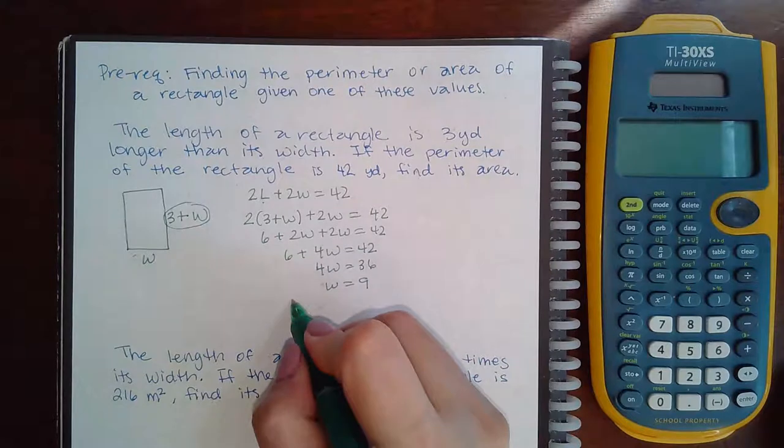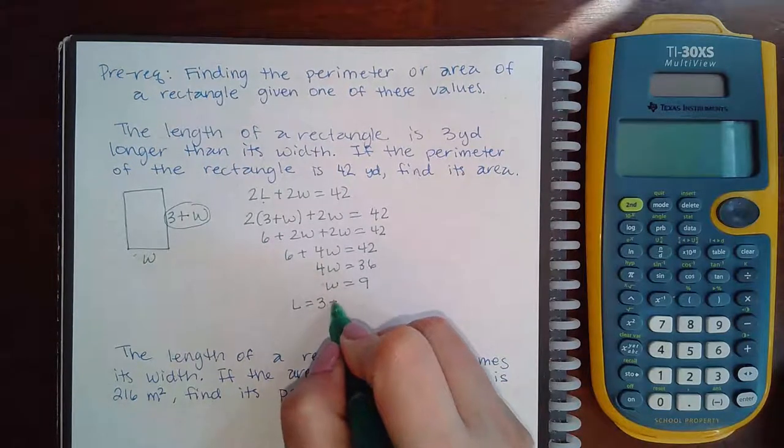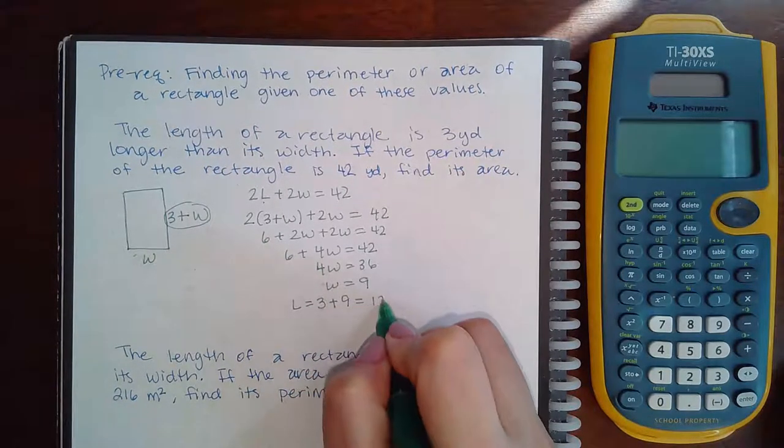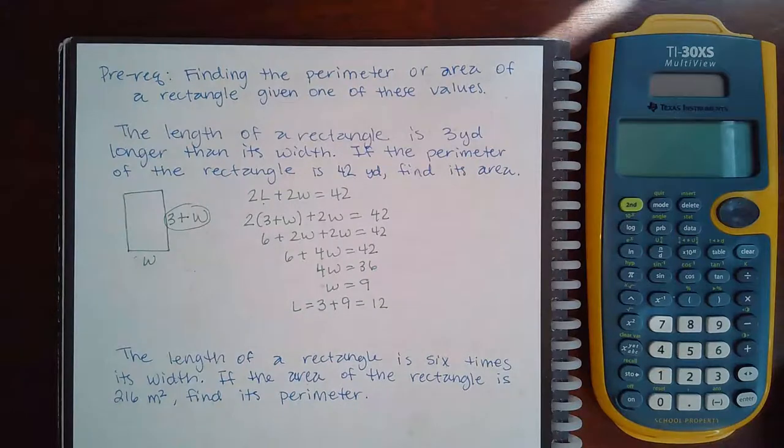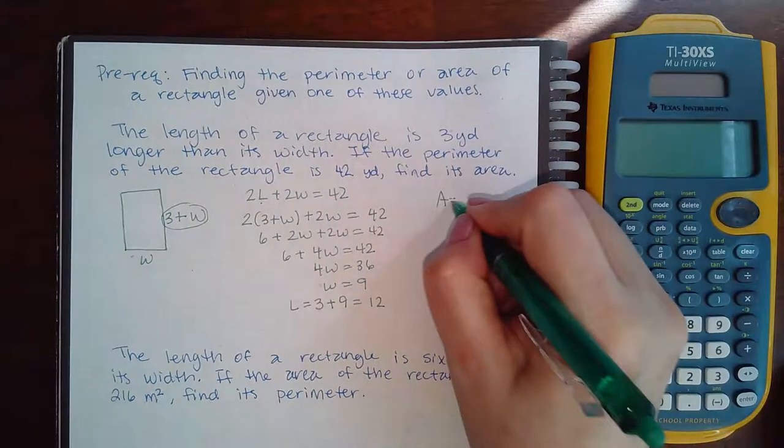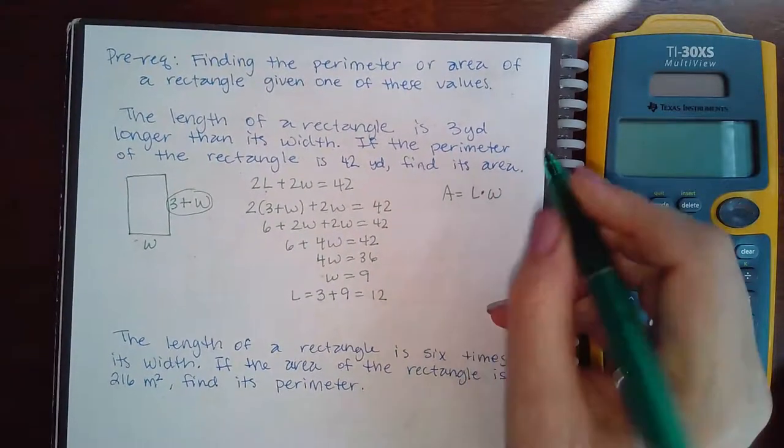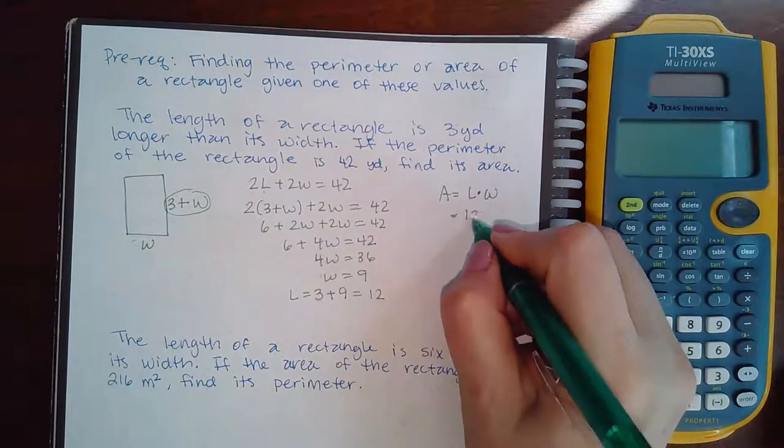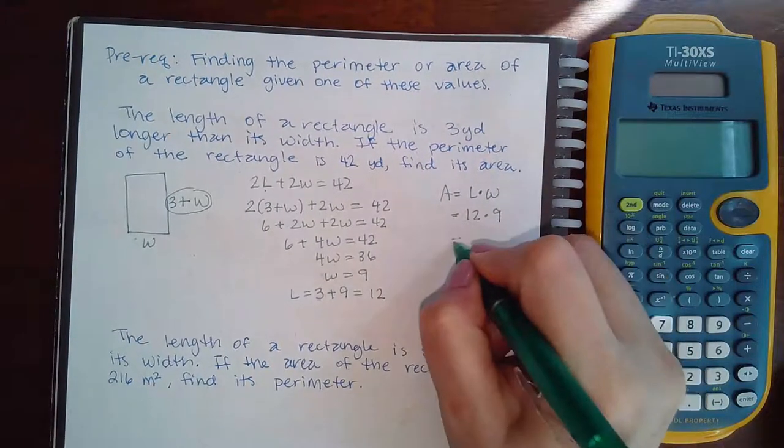Now, I also know that the length is going to equal 3 plus that 9, which is 12. Now, the area is found by doing length times width, so that means it's going to be 12 times 9, which is 108.